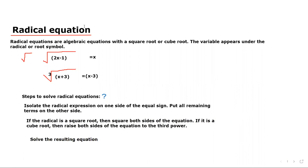So, there are basically three steps. First, isolate the radical expression on one side — in this equation, this one is the radical expression and this one is non-radical. You need to put all the radical expressions on one side of the equal sign and remaining terms on the other side. Then, if it is a square root, square both sides; if it is a cube root, raise both sides to the third power. Then solve the equation.